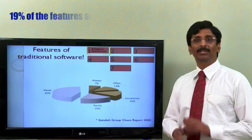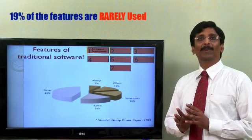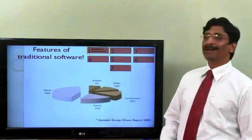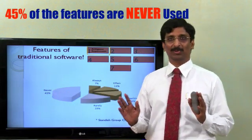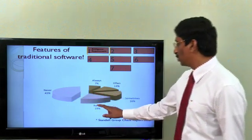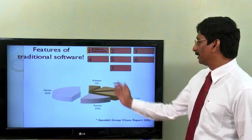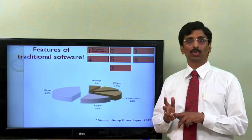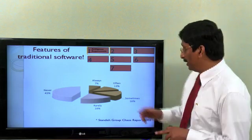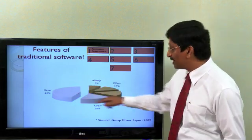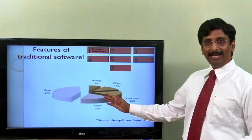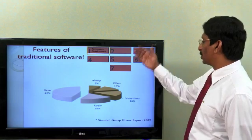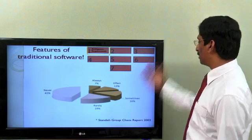And interestingly, about 19% of the features are rarely used, but the most interesting part is this. About 45% of the features are never used by the end users. Or if you add this and this together, rarely and never, about 65% of the features are either rarely used or never used by the end users. Which means, about two thirds of the features are rarely used or never used. And only about one third of the requirements are always used, often used, or sometimes used.